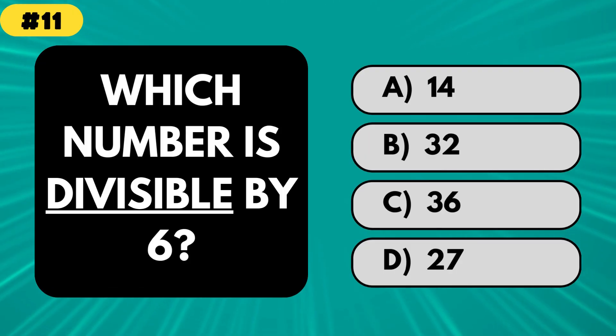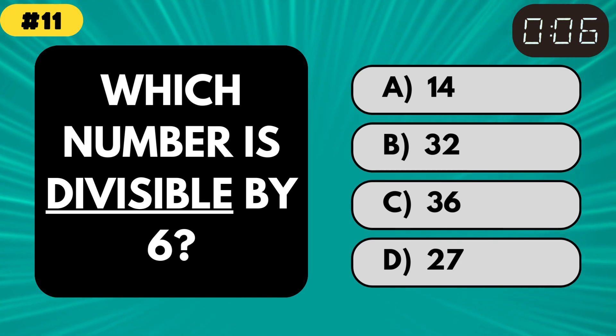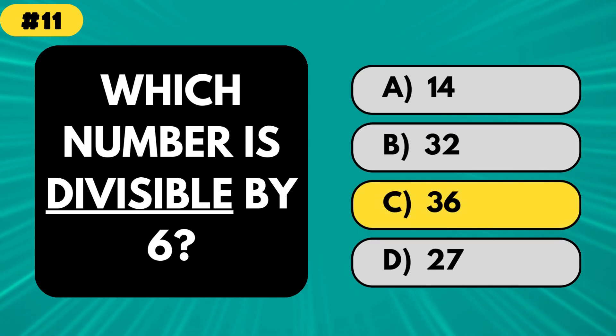Which number is divisible by 6? The correct answer is 36. 36 can be divided by 6, 6 times. That's fancy.